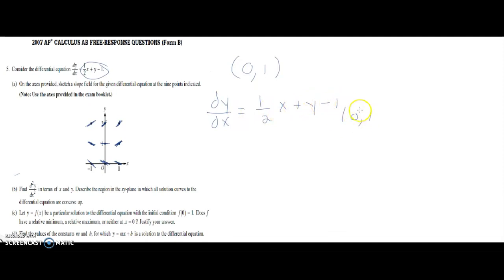The first derivative dy over dx equals one-half x plus y minus one. So if you want to know if it's a min or max, you're going to plug this in. dy over dx equals one-half times zero plus one minus one, which equals zero.